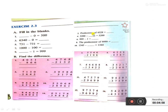Question 2: the predecessor of 4528. Write the given number first: 4528. Predecessor means minus 1. So 4528 minus 1 is equal to 4527. Question 3: 6340 minus 0. When you subtract 0 from any number, the answer is the same. So the answer is 6340.